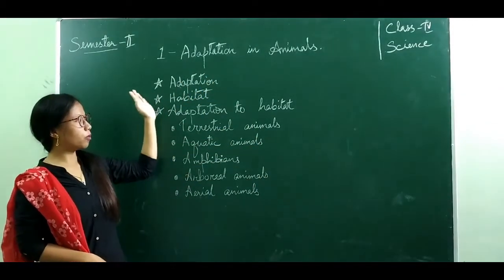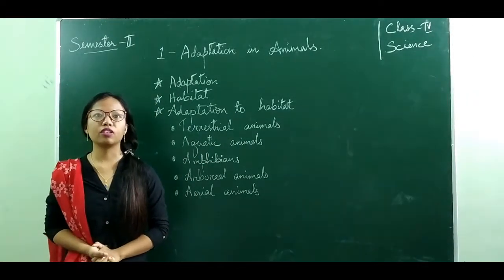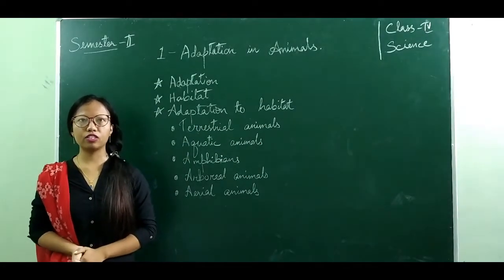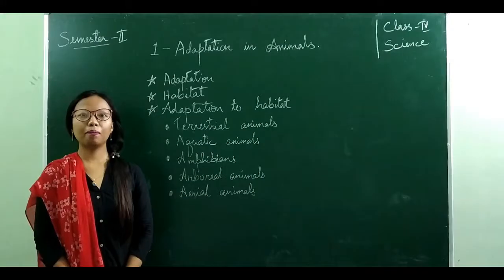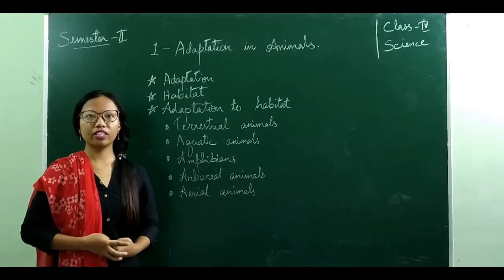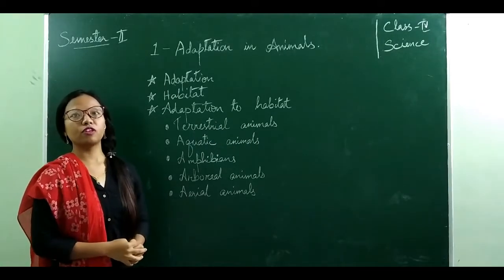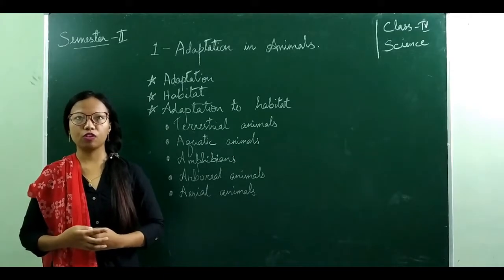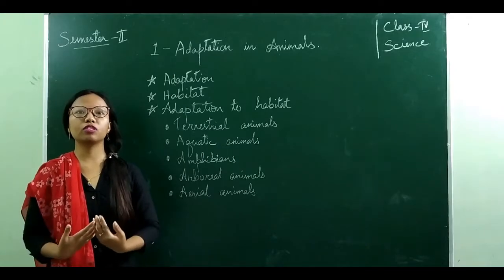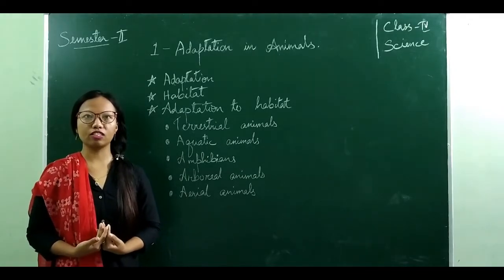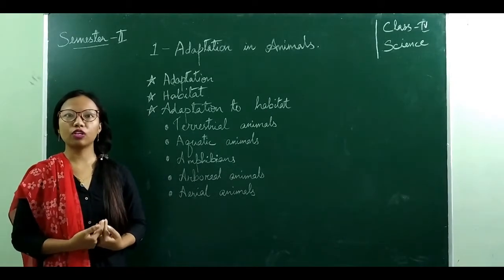Before beginning with the lesson, let us first understand what adaptation means. Have you ever heard of a dinosaur? Yes, we have. But have you ever seen a dinosaur nowadays? No. Because thousands of years ago, due to the sudden changes in the Earth's atmosphere or the Earth's surface, the dinosaurs could not adapt to the situation — they could not adapt to the sudden changes that occurred. That is the reason they got extinct.